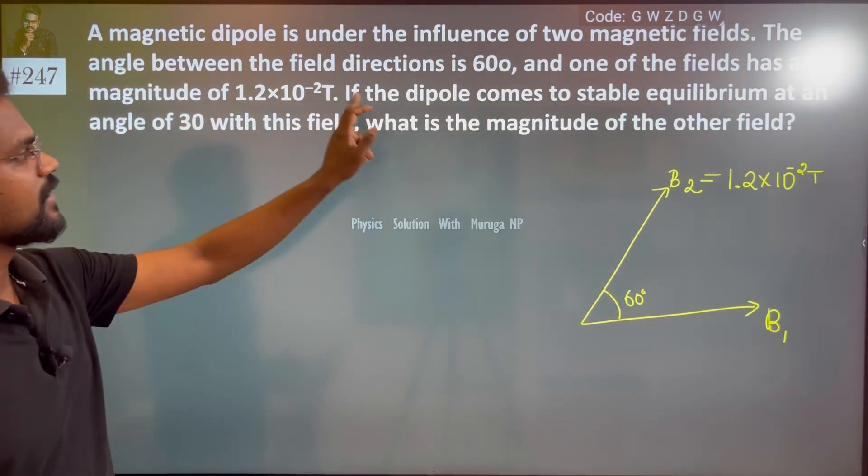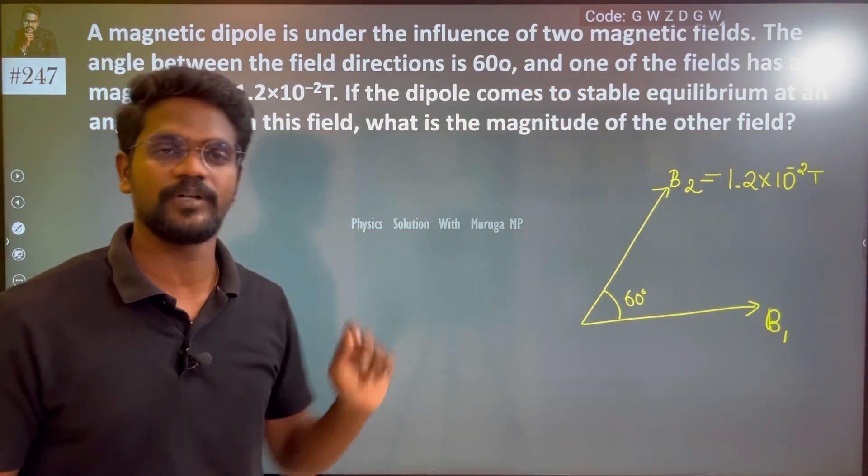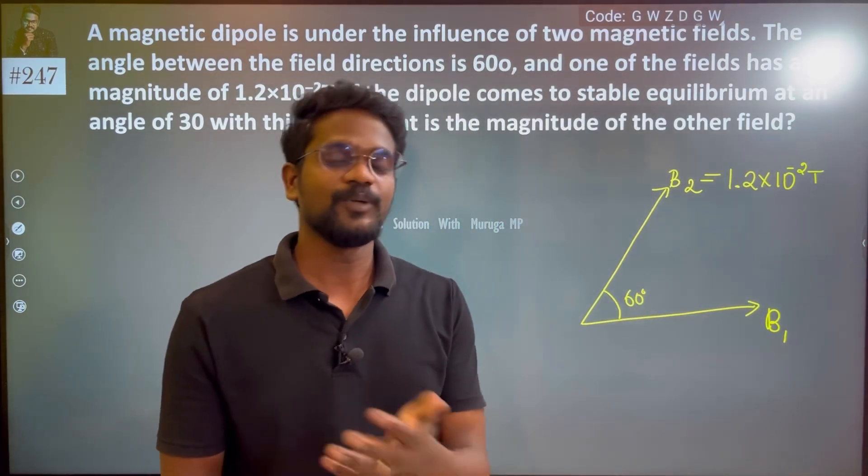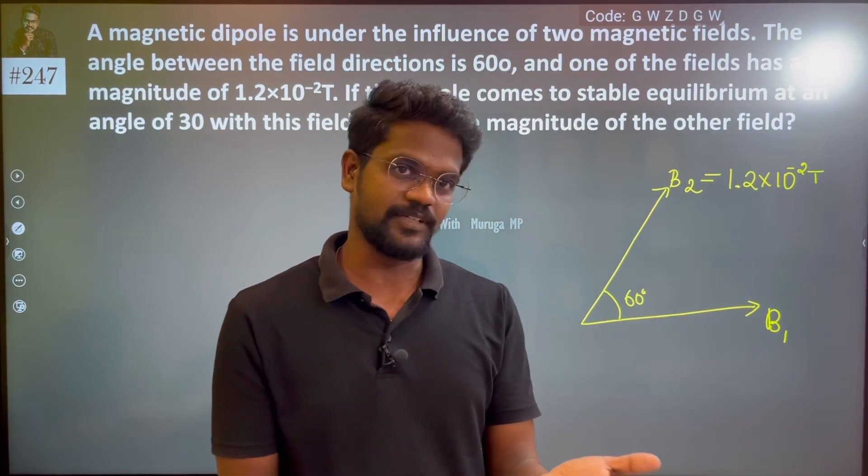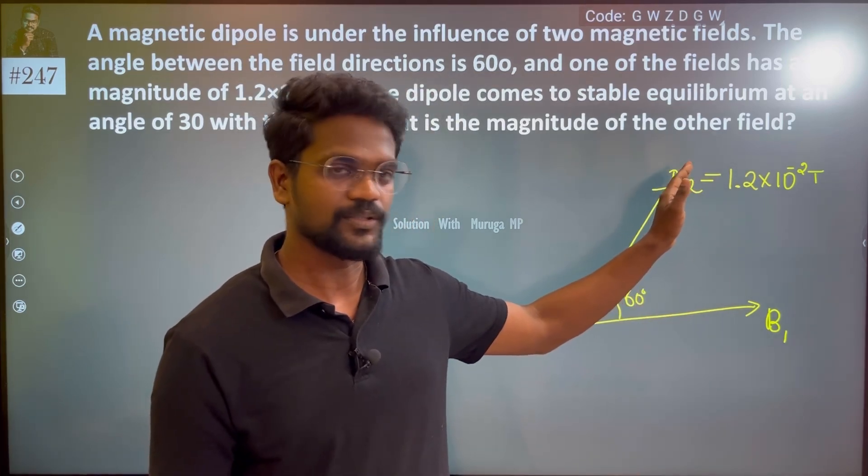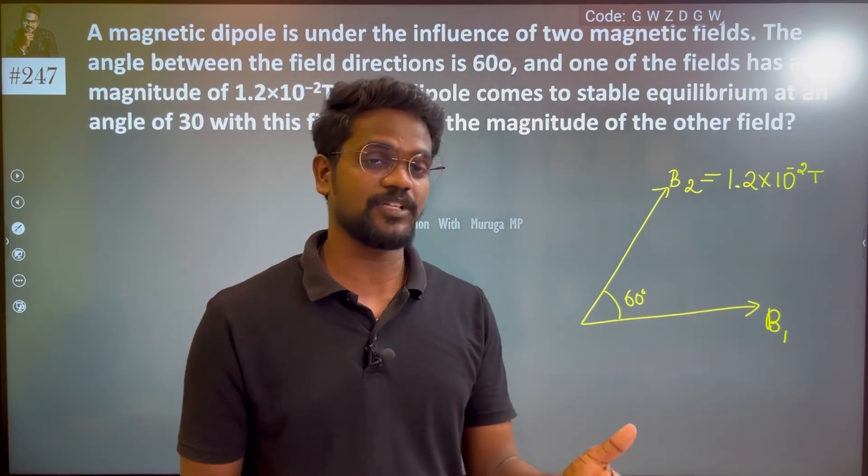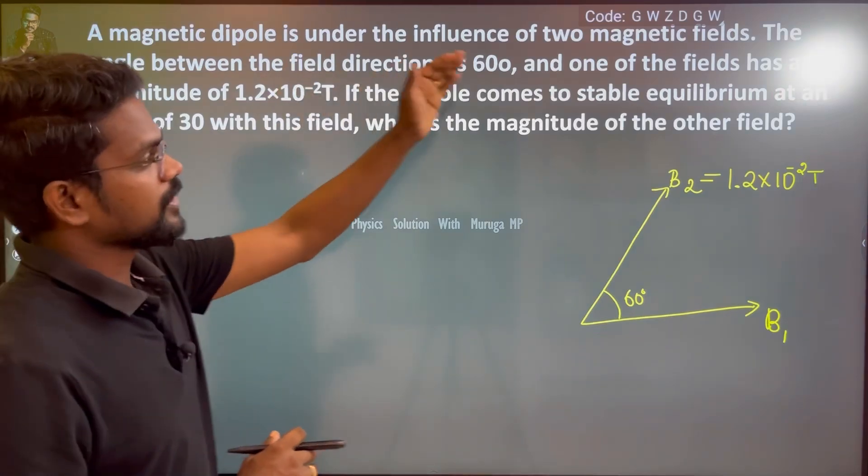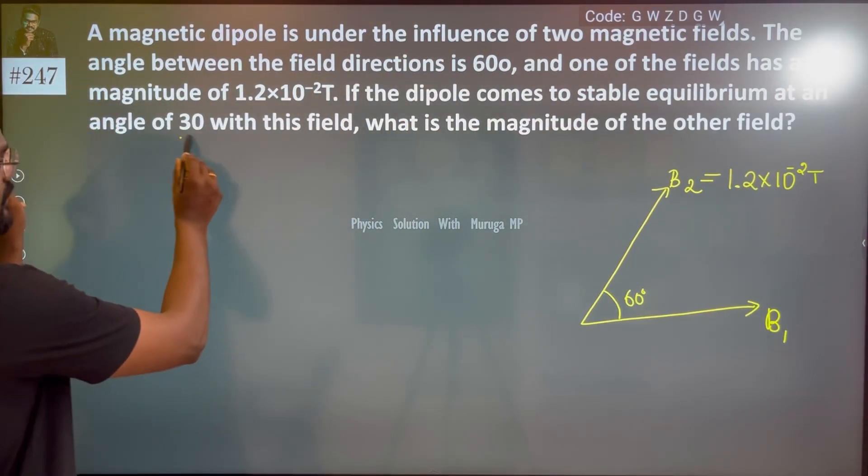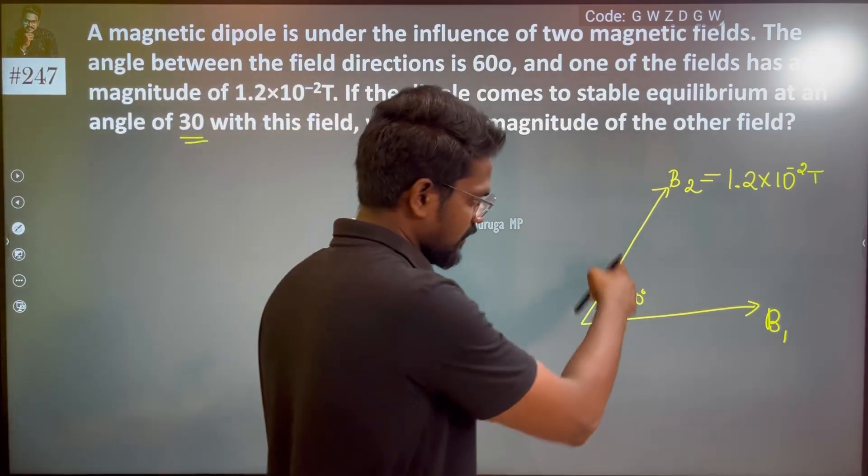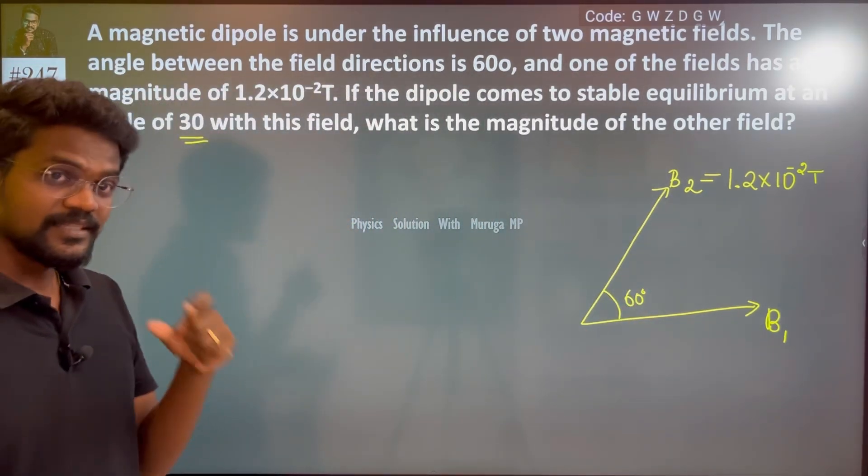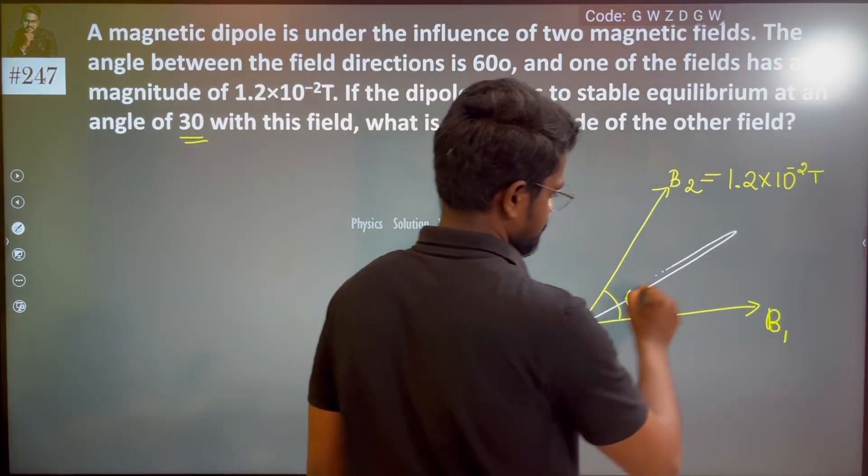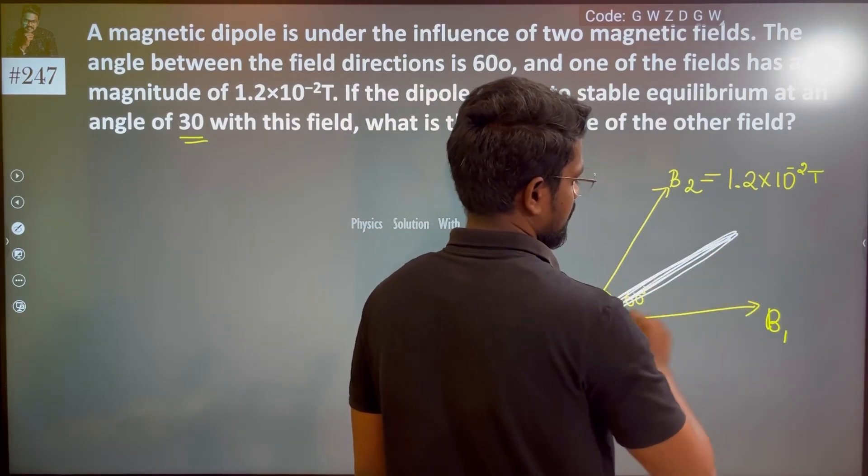If the dipole comes to stable equilibrium at an angle of 30 degrees with this field. The dipole moment is at 30 degrees and the dipole is stable.